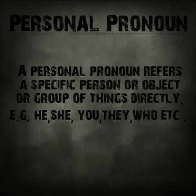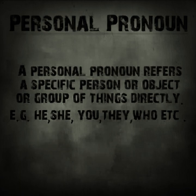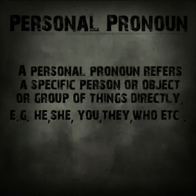The first type is personal pronoun. A personal pronoun refers to a specific person, object, or group of things directly. For example: he, she, it, you, we, they, etc. If I take the example — Ram is going to school — in the place of Ram, we can use 'he.' So 'he' can be counted as a personal pronoun.